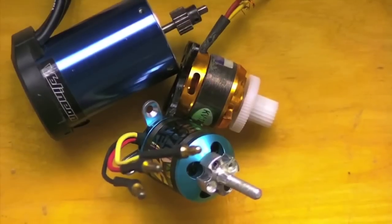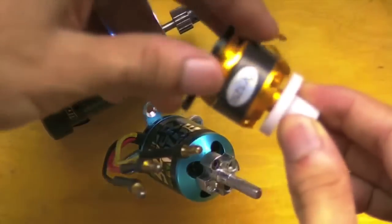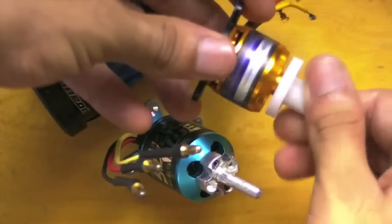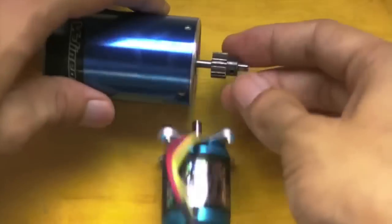Also, in out-runners, the whole can of the motor spins, not just the shaft. So if you look at this, for example, you can see that the whole motor is actually turning, not just the shaft, like in the in-runner.